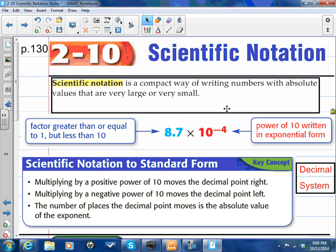So, Scientific Notation. Notice it's a vocabulary word. Scientific Notation is a compact way of writing numbers with absolute values that are very large or very small. If you were talking about how far away a planet is from Earth, yes, we would probably use Scientific Notation because that would be a very, very large number.